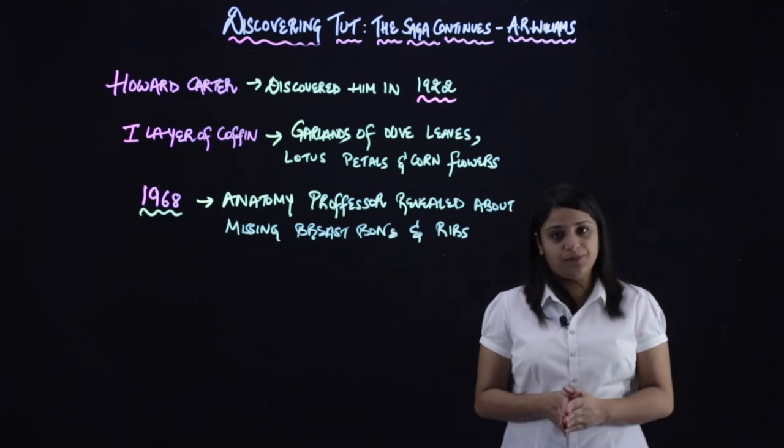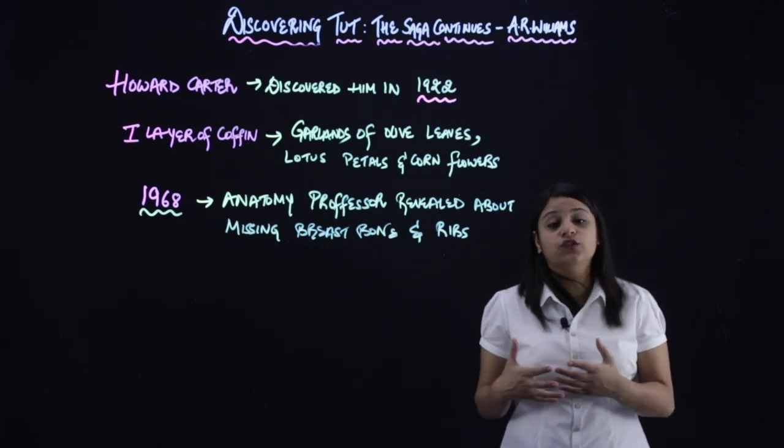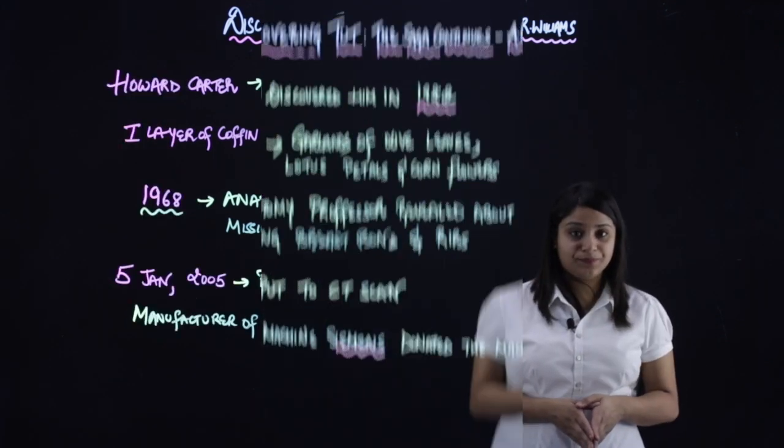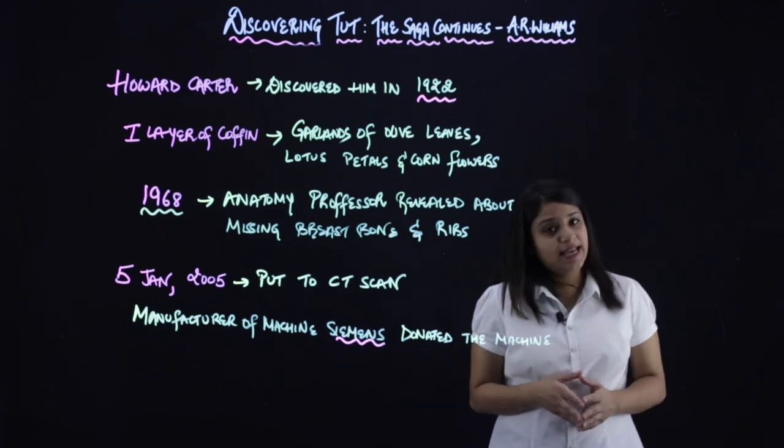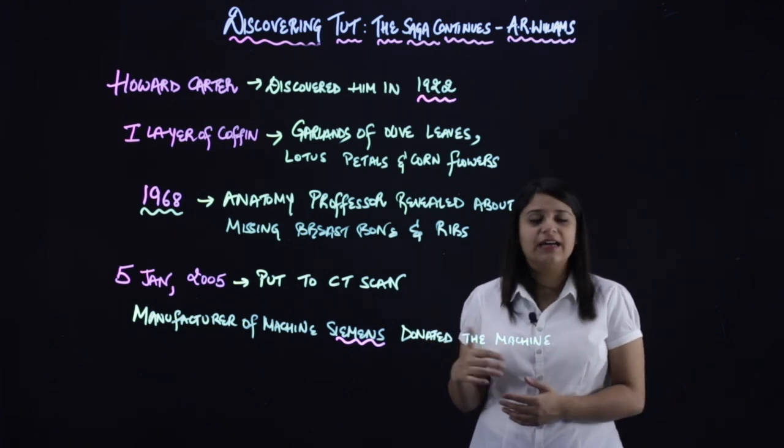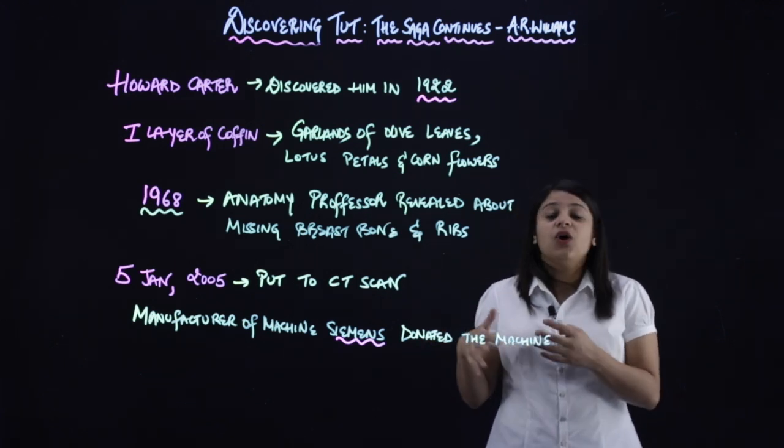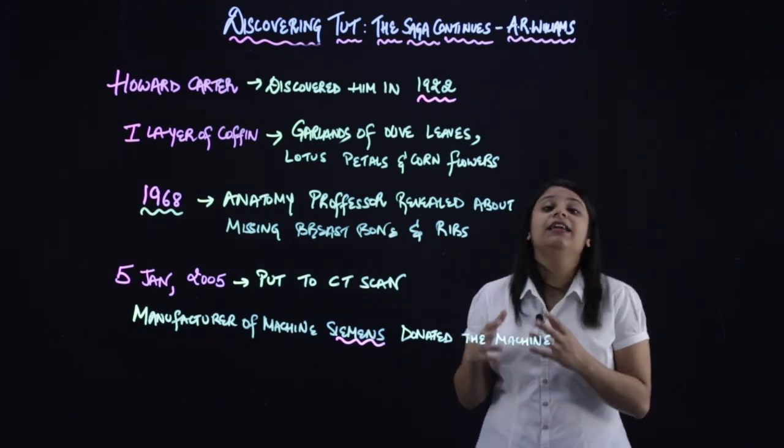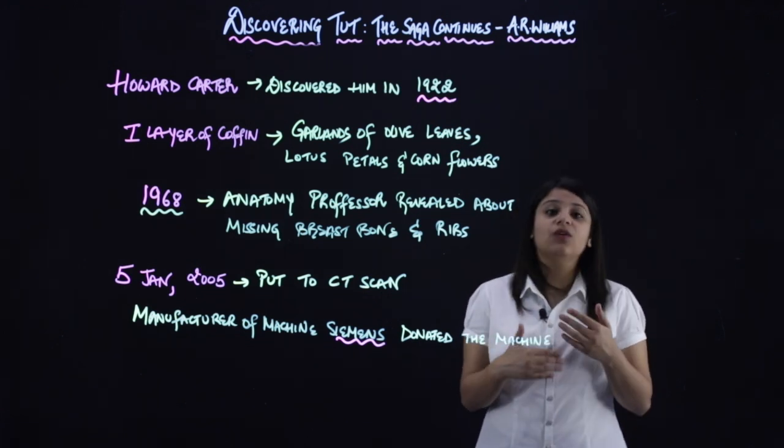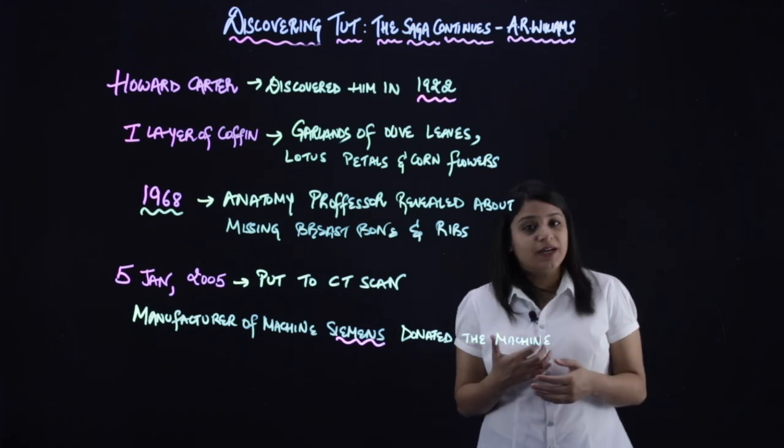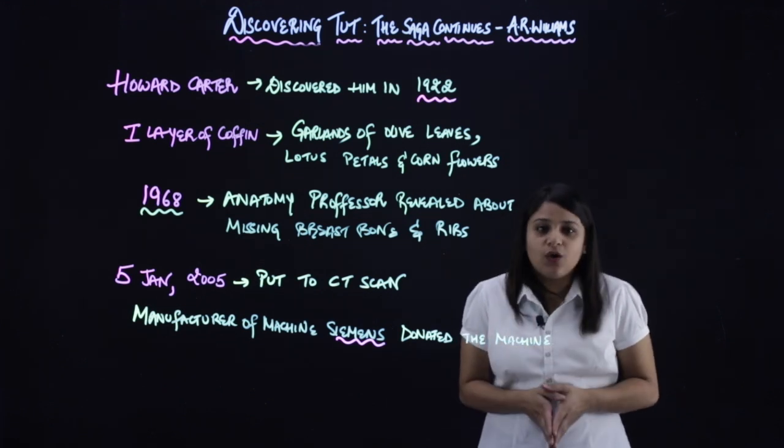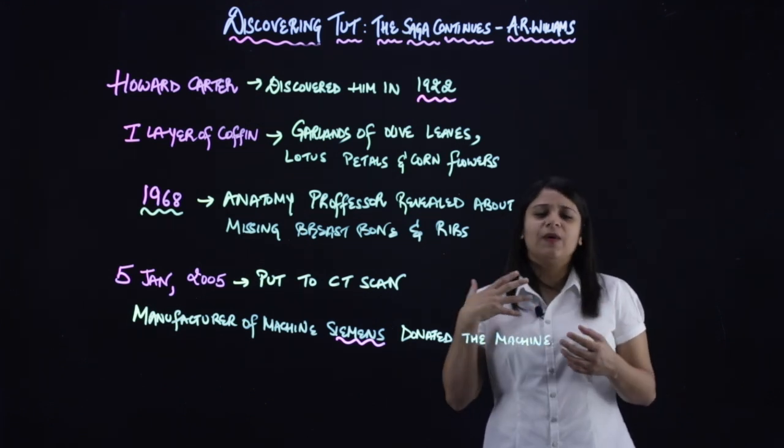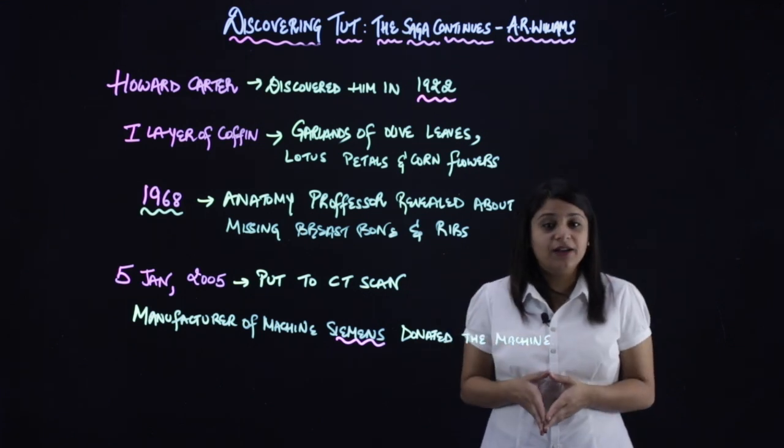So he was the first mummy that has gone through the CT scan. So during this process, when he was taken for CT scan, because as we read a while ago, that it was said that on his mummy it was written that whoever disturbs the king while sleeping, something bad will happen to him, his death will come. So it is said that such an atmosphere had developed outside.